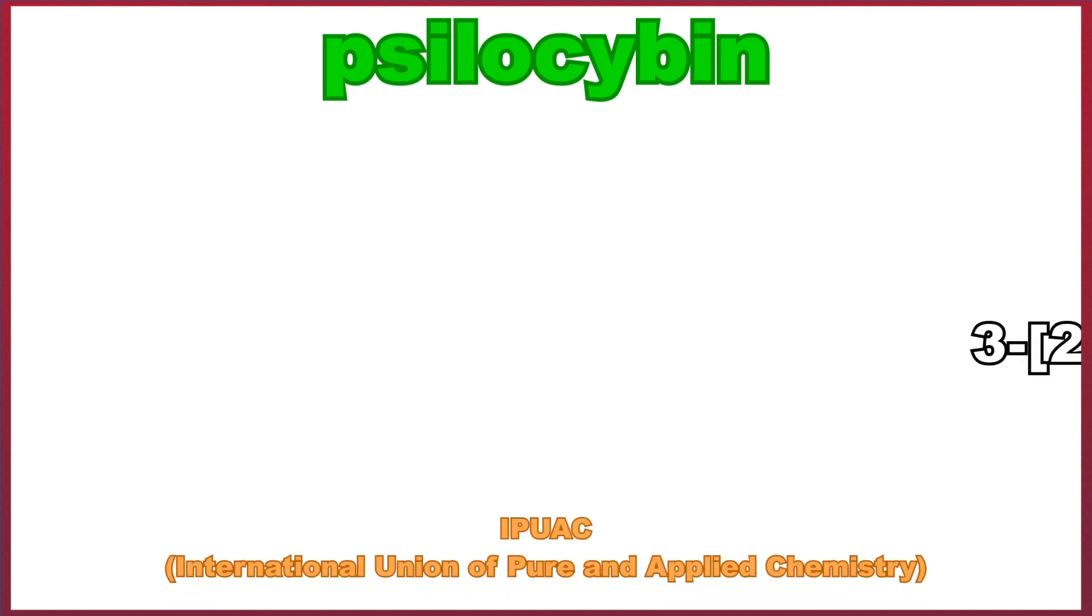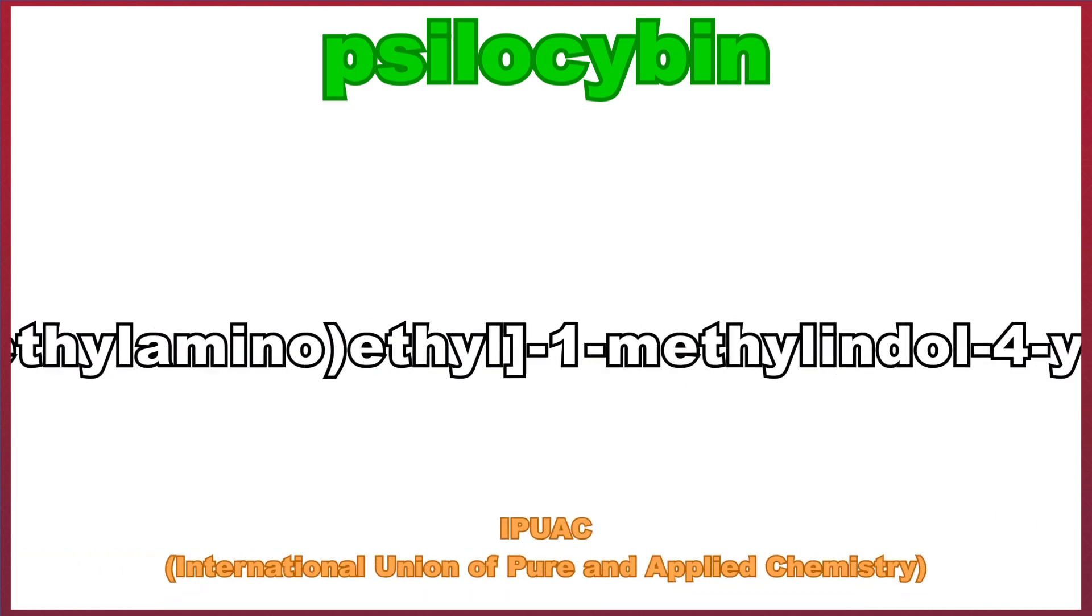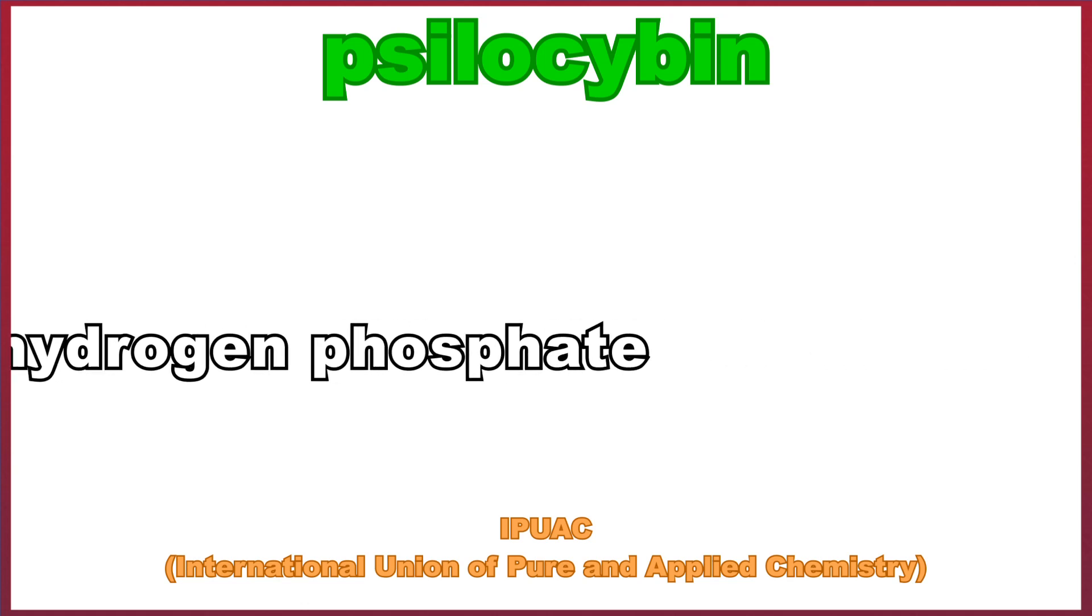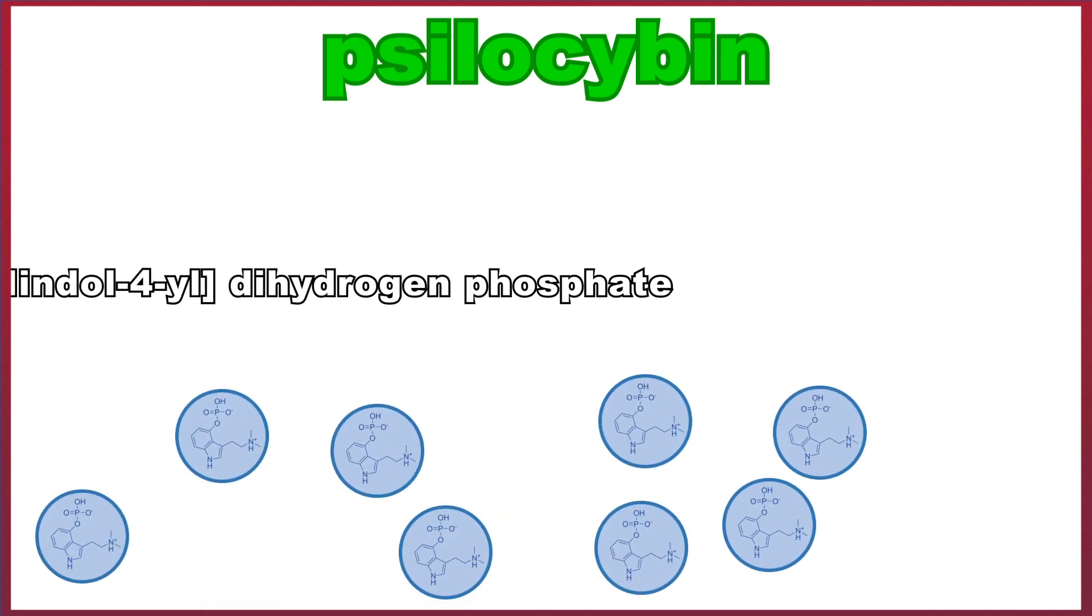Psilocybin, or to give its needlessly complicated IUPAC name, 3-(2-dimethyl-aminoethyl)-1H-indol-4-yl-dihydrogen-phosphate, is an extremely common psychedelic chemical which is produced by over 200 species of fungi.